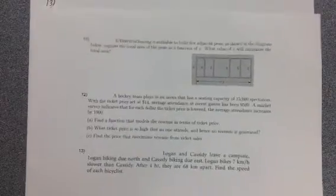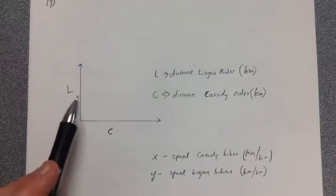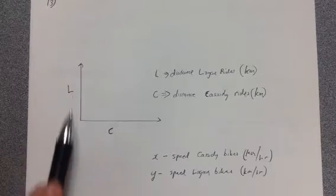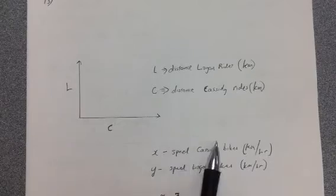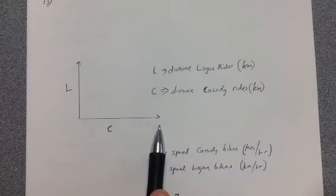So here's what we have going on. Logan is headed north and Cassidy is headed east. And I drew Cassidy's line longer because she's traveling faster.